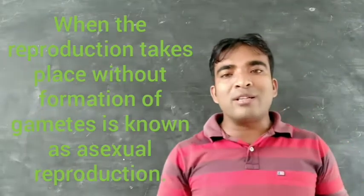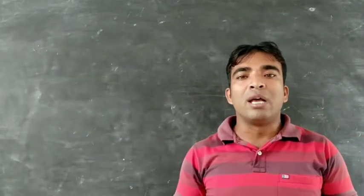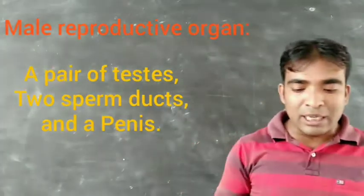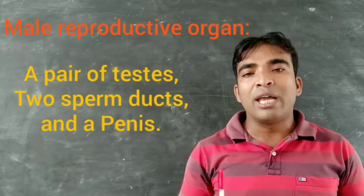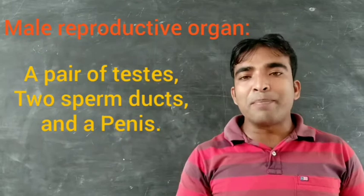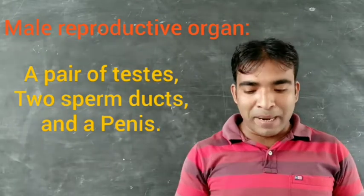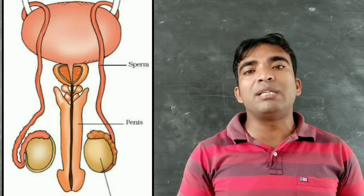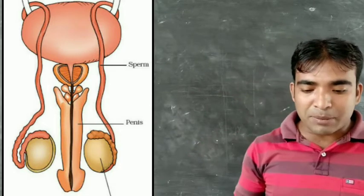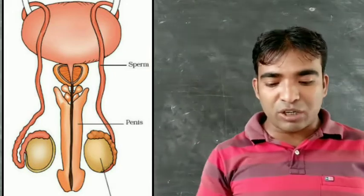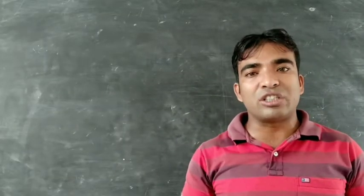To understand sexual reproduction in animals, we have to understand the different reproductive organs — the male reproductive organ and the female reproductive organ. The male reproductive organs include a pair of testes, two sperm ducts, and a penis. These testes produce the male gametes known as sperm. Each sperm is unicellular. The body structure of the sperm includes a head, a middle piece, and a tail.